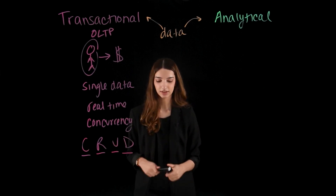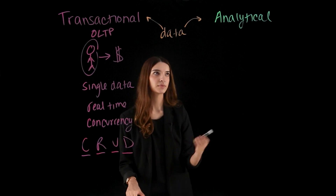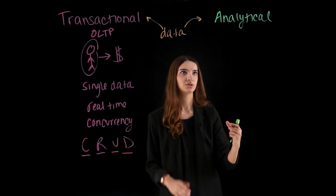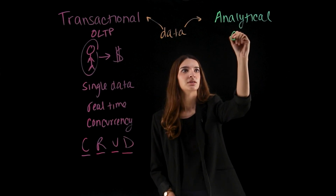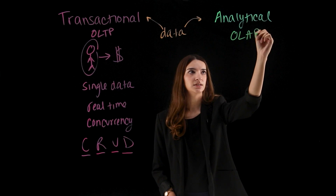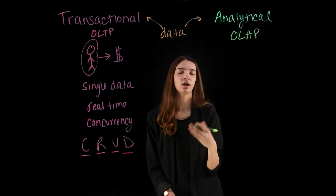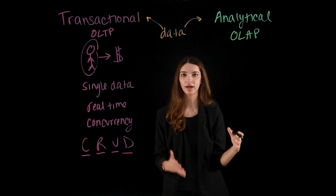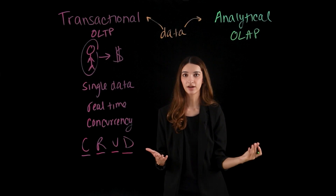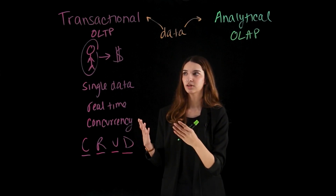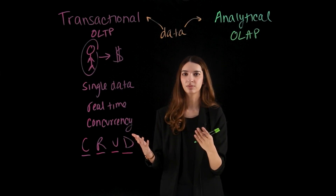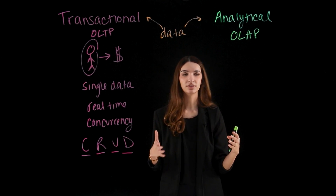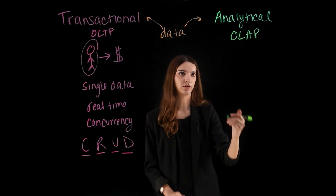Now switching gears, let's look at OLAP data stores, or analytical data stores. Another word for this is OLAP — online analytics processing. This looks more at data as an aggregate. Whereas before we were focused on a single entity making a single purchase, now we are focused on data as an aggregate.